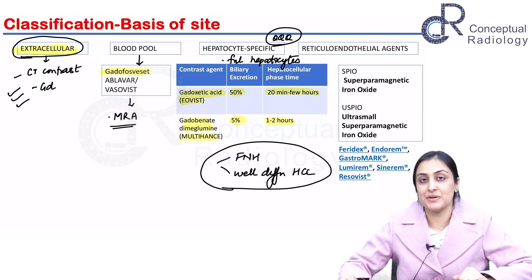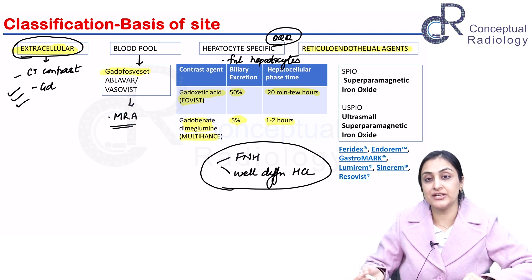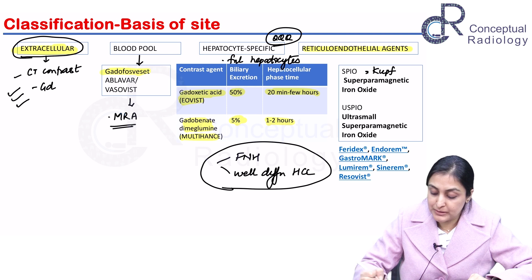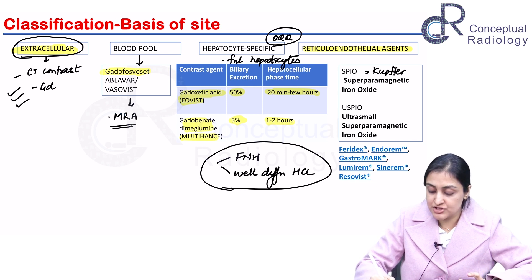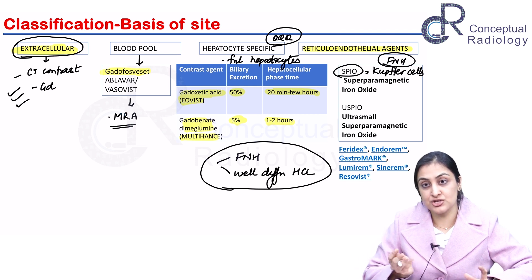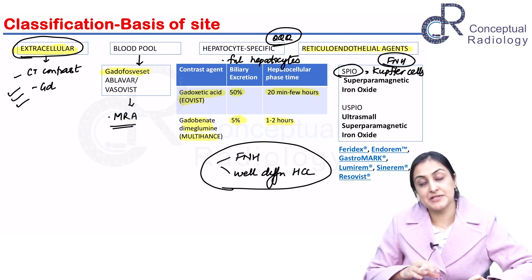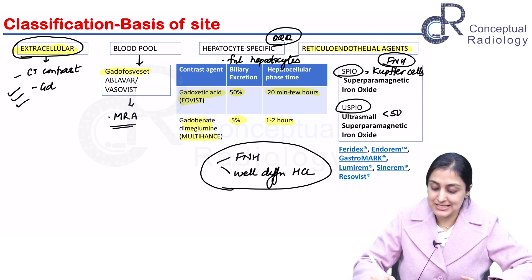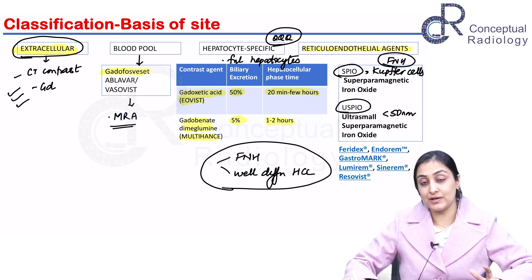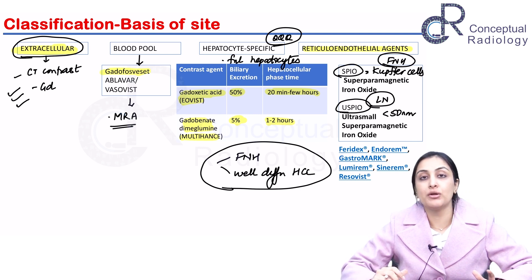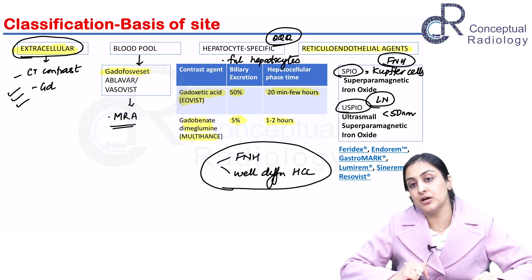Reticuloendothelial agents are taken up by Kupffer cells. SPIO (superparamagnetic iron oxide) is taken up by the RES, and since Kupffer cells are present in FNH, it shows preferential SPIO uptake whereas other tumors do not. Ultra-small SPIO (USPIO), when the particle is less than 50 nanometers, is used for lymph nodes — taken up by normal and reactive lymph nodes but not by metastatic lymph nodes.